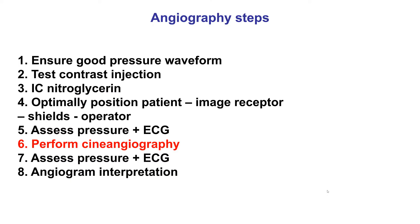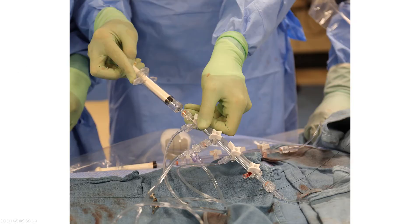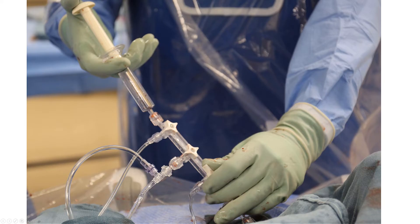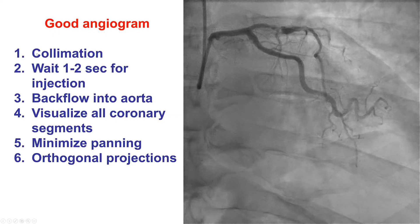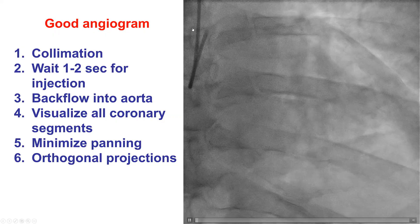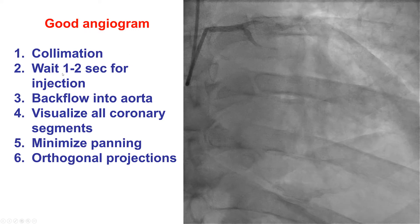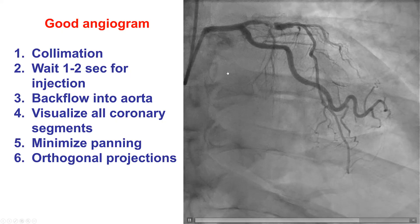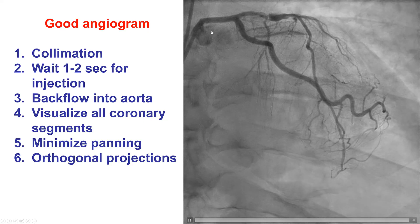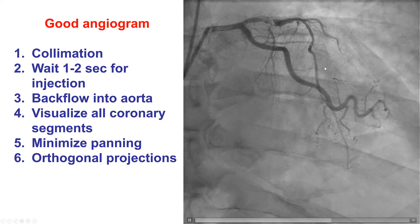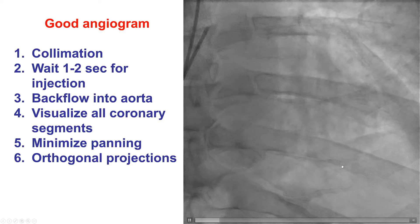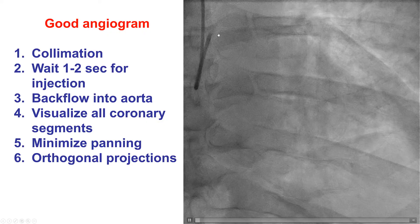The sixth step is to perform the actual cine angiography. This is done by filling up the syringe with contrast. It is critical to keep the syringe vertical to minimize any bubbles entering into the line. Then the operator turns the three-way stopcock and injects, obtaining the image of the coronary artery. The sequence is usually to first collimate and position the x-ray image intensifier properly, then start the cine, wait one to two seconds so that any calcium can be visualized, then inject the contrast. It is important to see the contrast coming back into the aorta, visualizing all the way to the ostium — otherwise ostial lesions can be missed. Panning may be needed to visualize all the coronary segments and distal branches, and this is repeated in orthogonal projections to ensure no lesions are missed.